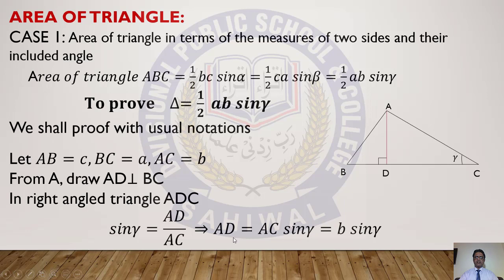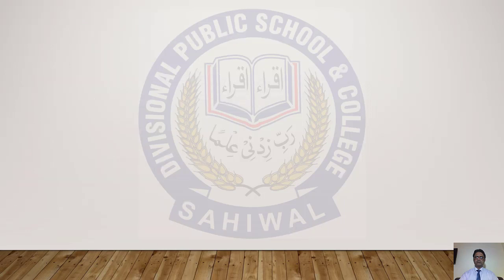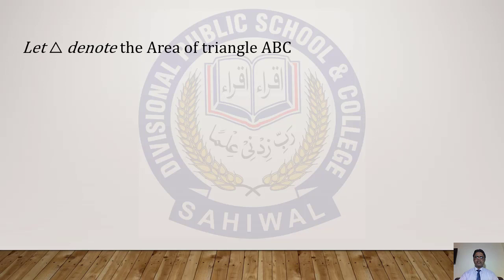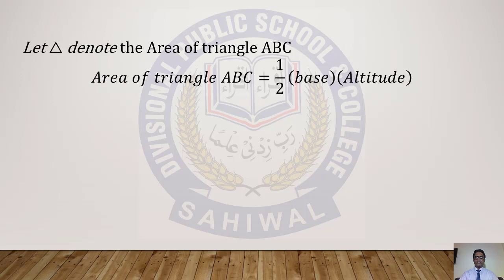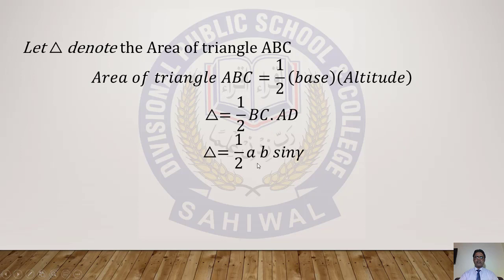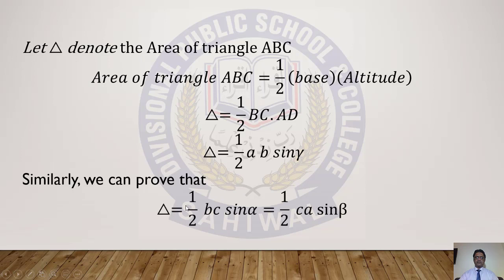In place of AC we put b, so AD = b sin γ. Let delta denote the area of triangle ABC. Area of triangle ABC = (1/2) × base × altitude. Base is BC = a, and altitude is AD = b sin γ. So area of triangle = (1/2) ab sin γ. Similarly, we can also prove that area = (1/2) BC sin α, and (1/2) CA sin β.